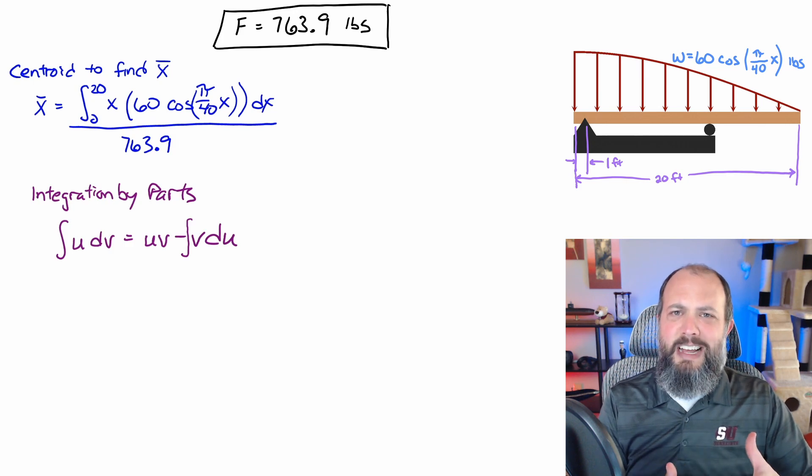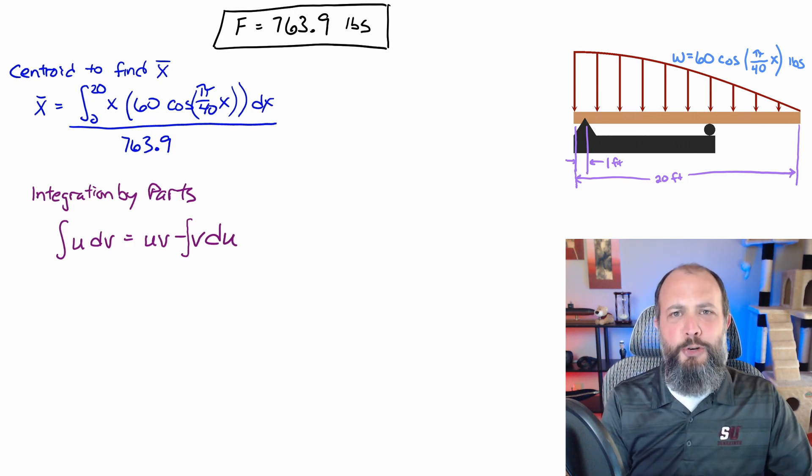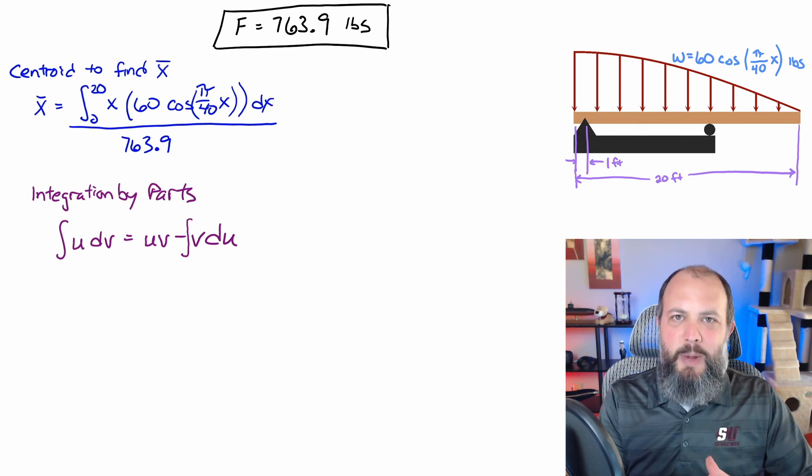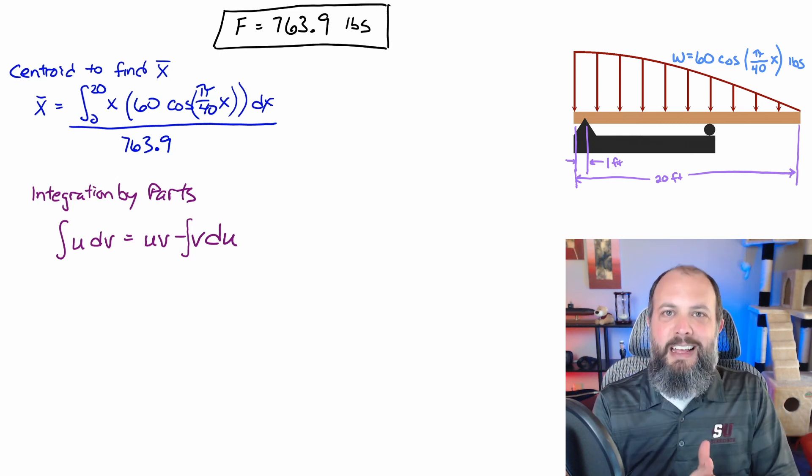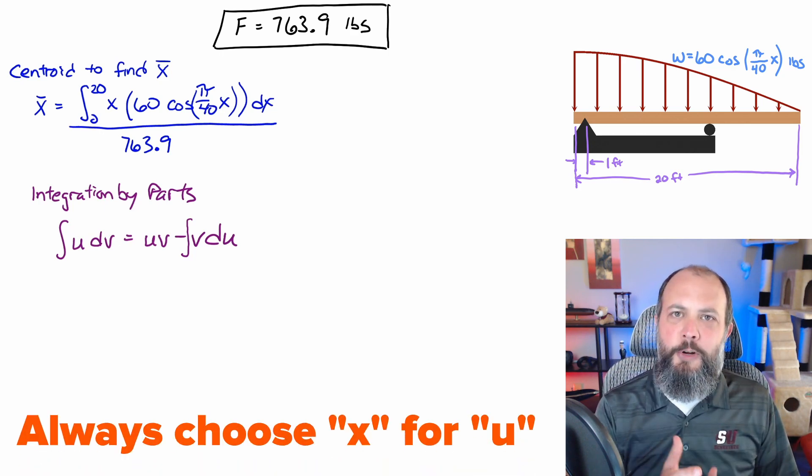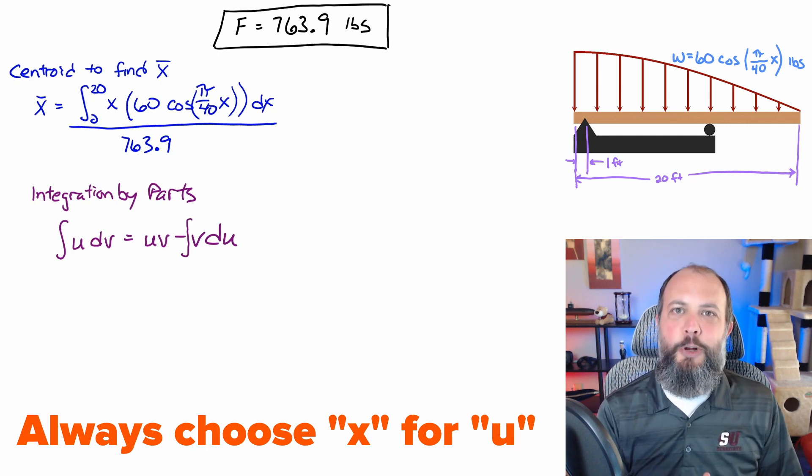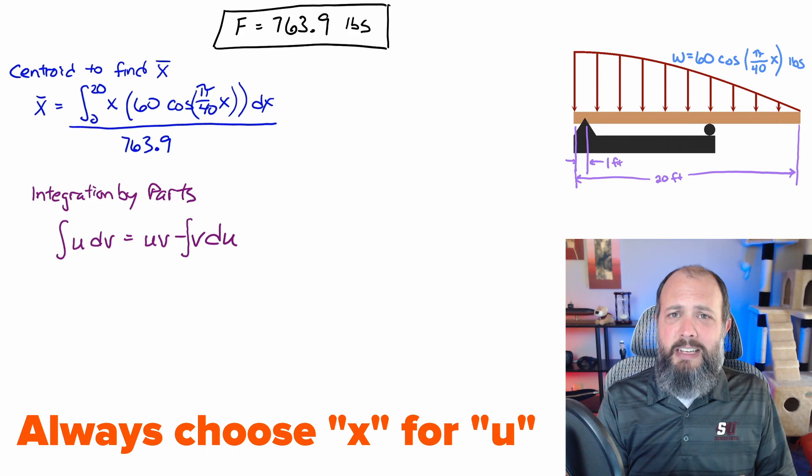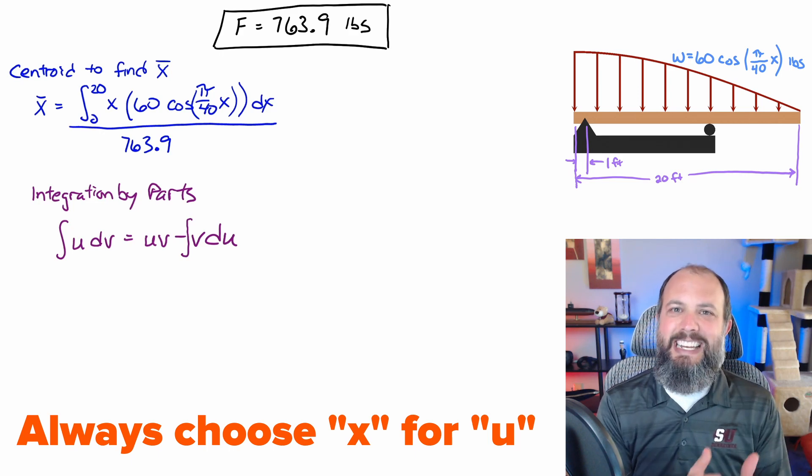It takes some practice in recognizing which part of your integral should be U and which part should be DV. And the way to recognize this is when you do integration by parts, you're still going to have to do an integral. And the integral you're going to have to do is going to be of DU. So you want to choose the term for U that gets easier when you take its derivative. So for this problem, that's X. When you take the derivative of X, you're just going to get one. So basically your integral will get easier. If instead you choose the cosine as your U term, when you take its derivative, you're just going to get a sine function and we're going to be left with another integration by parts.